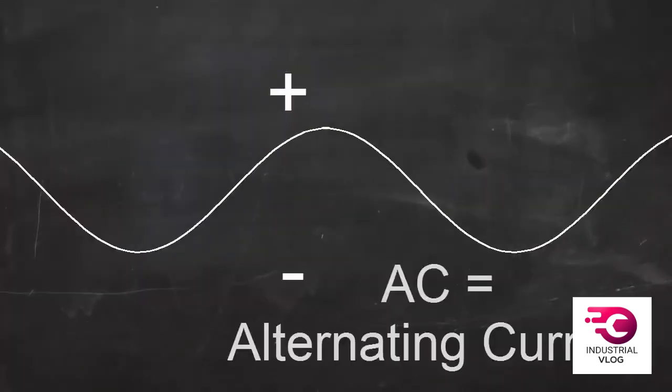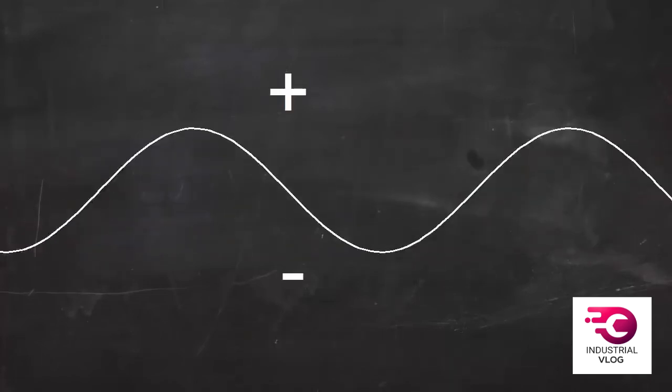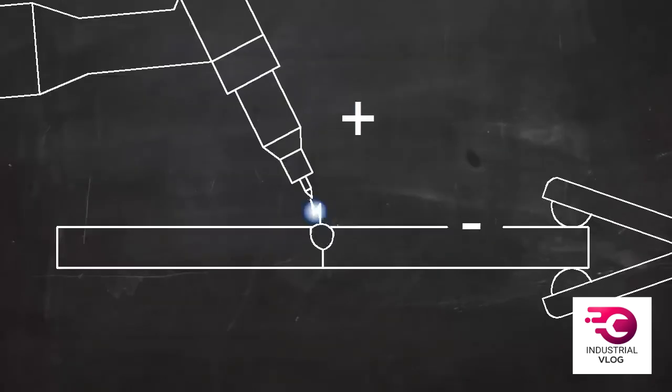When welding aluminum, however, AC is used. In AC, the positive and negative voltages switch back and forth between the electrode and the workpiece. This puts more heat on the electrode but it has a cleaning effect on the workpiece. You see, aluminum forms oxides that float to the top of the weld pool and prevent a good weld. AC current helps control these oxides.